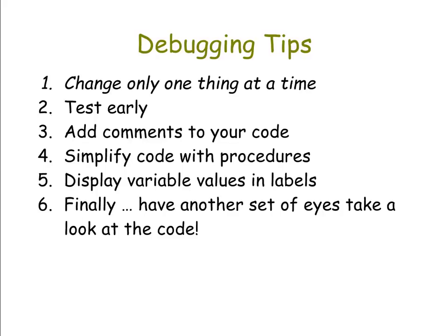You can simplify your code with procedures — if you end up with a lot of blocks strung together, think about breaking that down into procedures and then combining the procedures. You can also display the value of variables in labels or pop-up boxes on screen if you're getting invalid values. And finally, another good technique is to have another set of eyes look at the code — don't bang your head too long against the keyboard; have somebody else help you spot the error.